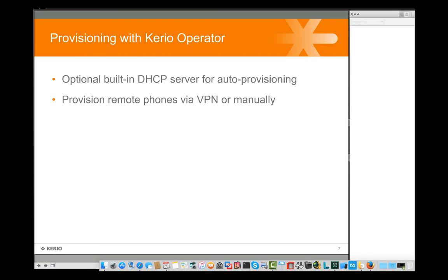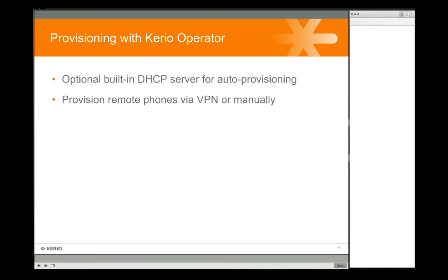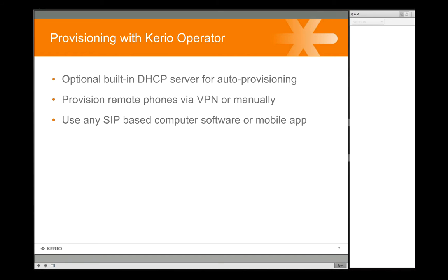You can also remotely provision phones. It's very common to have remote employees working in other locations. You can connect through VPN — most phones support L2TP over IPsec — or alternatively, make sure that your SIP ports are open on the firewall and then manually configure the soft phone or the actual phone. That's something we'll show in the demonstration — what you need to configure to make that happen.